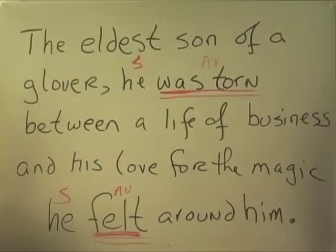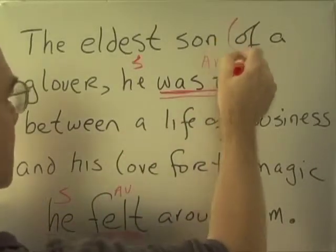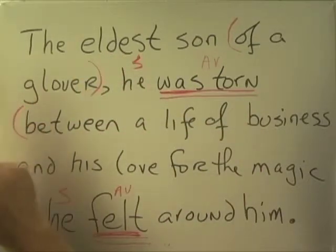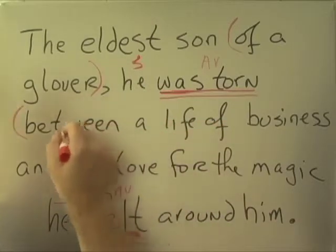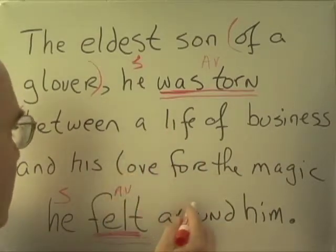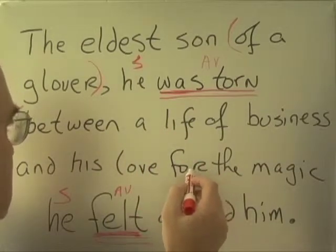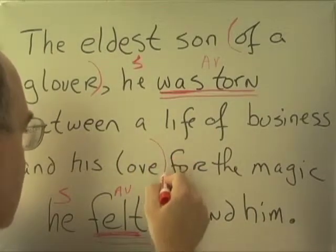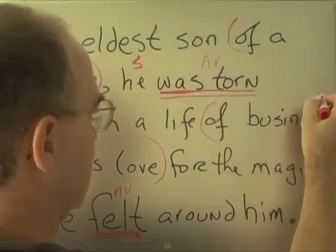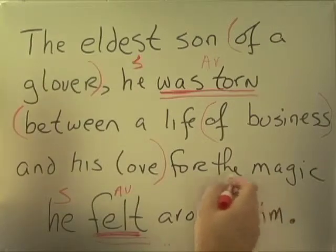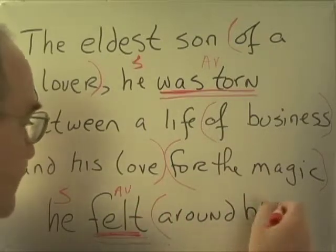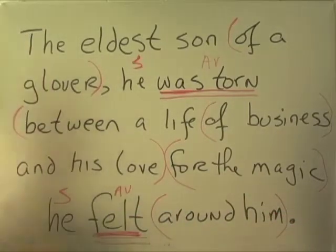Now I see some prepositional phrases. 'Of a Glover' — and 'between.' I was going to say 'between a life,' but it's 'between a life and love' — that's two objects. There's a prepositional phrase inside, and then there's another one right here, and in fact here's a final one. Lots of prepositional phrases in this sentence.